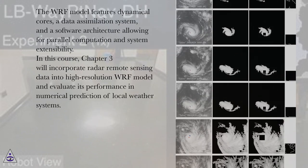The WRF model features dynamical cores, a data assimilation system, and a software architecture allowing for parallel computation and system extensibility. In this course, Chapter 3 will incorporate radar remote sensing data into high-resolution WRF model and evaluate its performance in numerical prediction of local weather systems.